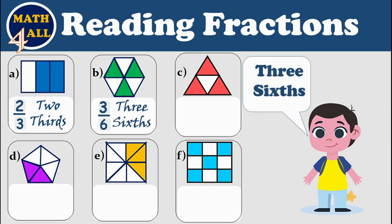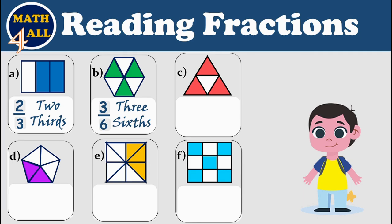Excellent! Now I will answer the next example C. As you see, the colored parts — the number of parts I have — is just three. And the one whole is divided into four parts, so all the parts in this shape is four. I will read it as three over four, or three fourths. You can also read it as three quarters. Now it's your turn — answer the next, example D.